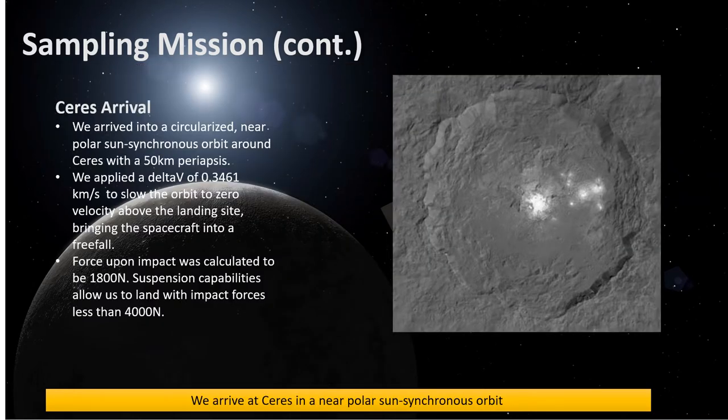After reaching the Ceres sphere of influence, we circularized our space vehicle at a 50-kilometer altitude orbit around Ceres by means of an on-board propulsion system. That circular orbit is located at a near-polar sun-synchronous orbit around Ceres. We then used the on-board propulsion system to reach a velocity of zero at the polar sun-synchronous orbit, thus utilizing free-fall mechanics to land on the surface of Ceres. To sustain a safe landing, we found that we will need a suspension system to sufficiently dampen approximately 1,800 newtons of force on impact, which should be attached to our payload to ensure a safe landing.